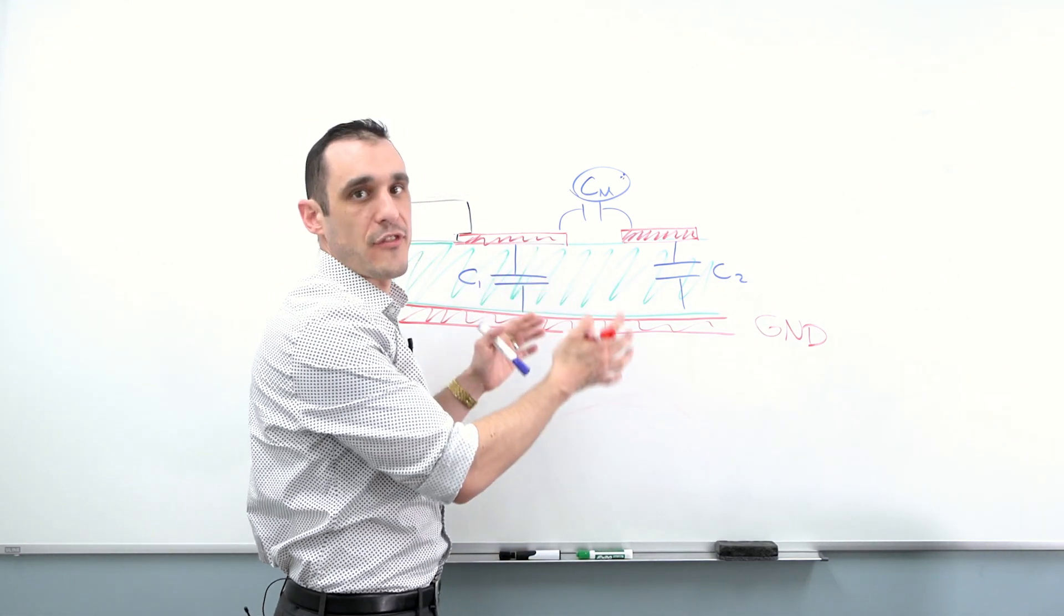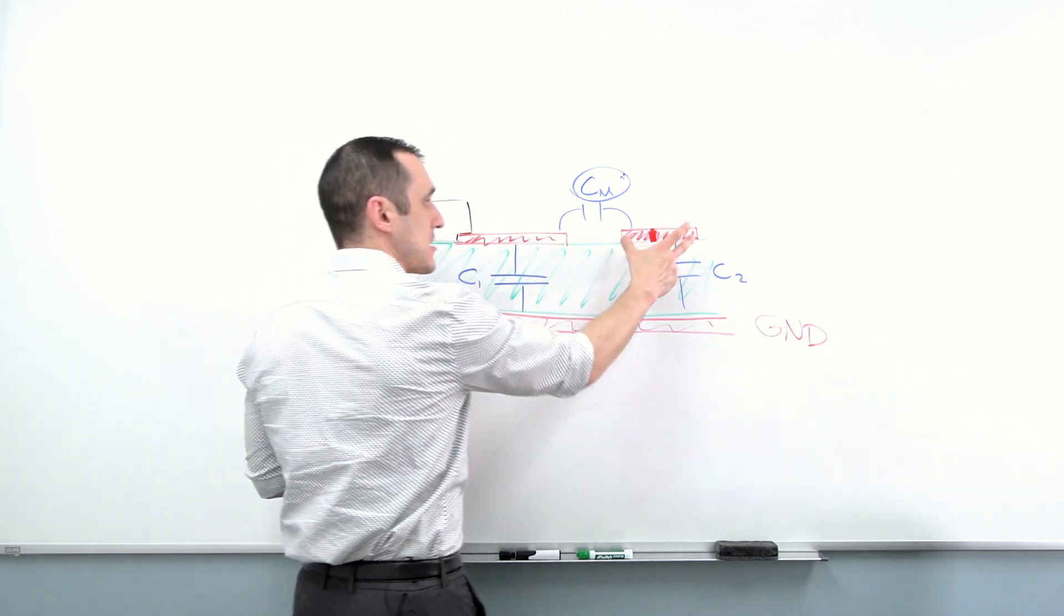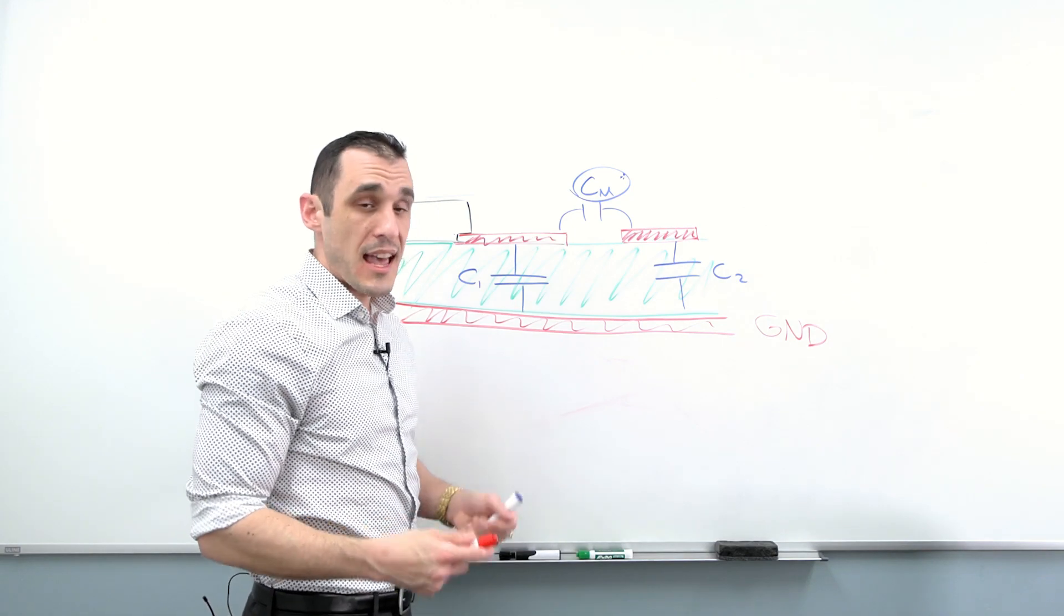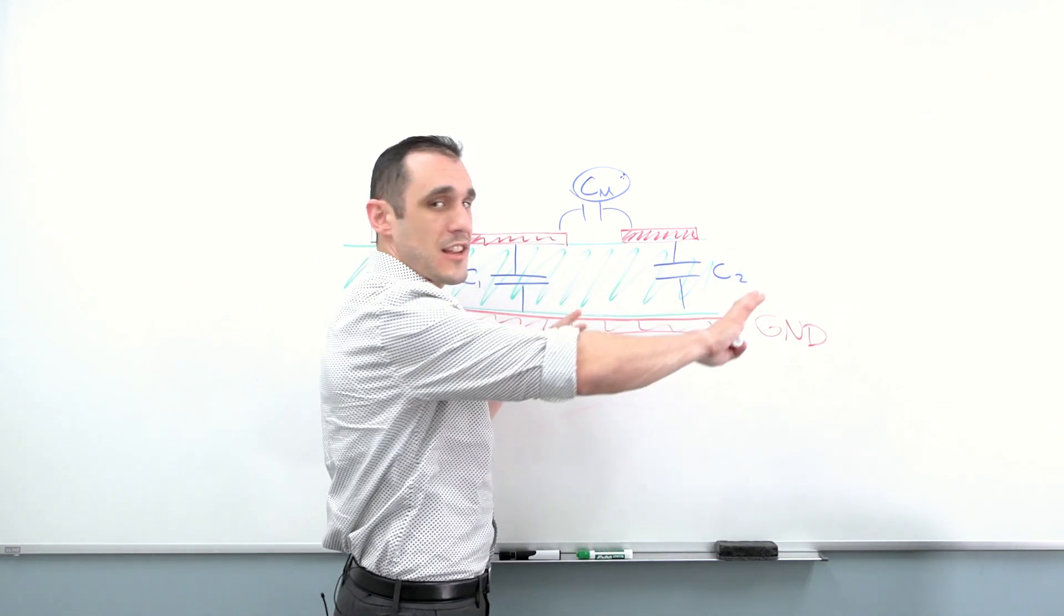Or you maybe haven't finalized the stack up or any of this other stuff. So if you just take this, pick it up, move it over, that is the easiest way to reduce parasitic capacitance. And it's actually the easiest way to reduce crosstalk generally is just space stuff out more.